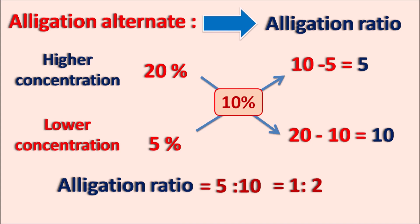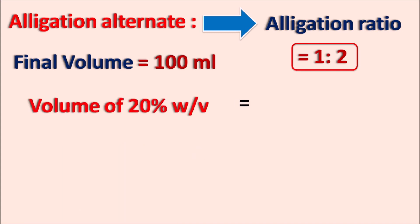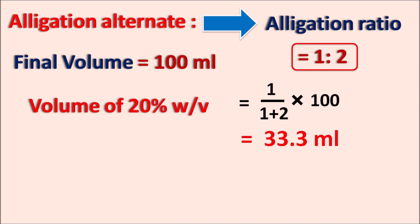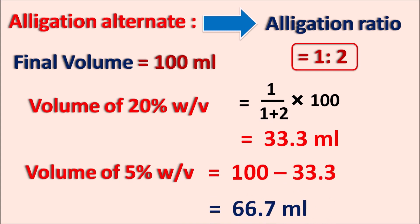The first step in allegation alternate is to identify the allegation ratio. Now for the volumes: with an allegation ratio of 1:2 and a final volume of 100 ml, the volume of the 20% solution = 1/(1+2) × 100 = 33.3 ml. The volume of the 5% solution = 100 − 33.3 = 66.7 ml. So 33.3 ml of the 20% solution should be mixed with 66.7 ml of the 5% solution to get 100 ml of 10% weight by volume solution.